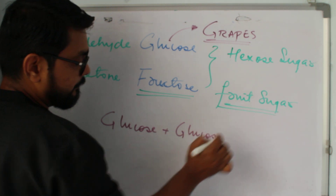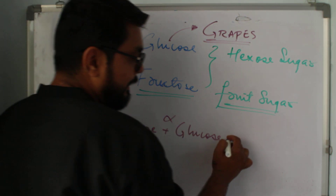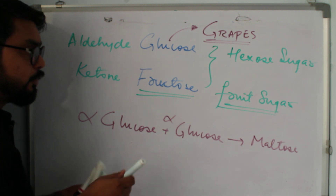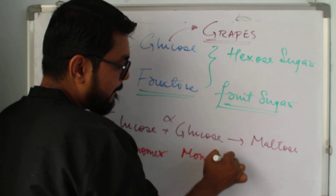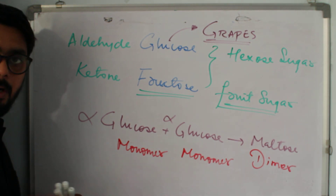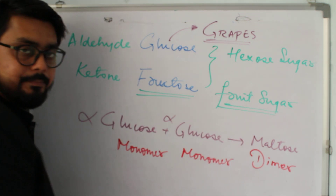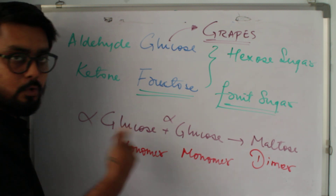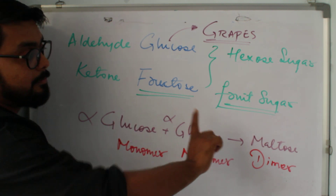Now we'll add glucose plus glucose — specifically alpha glucose plus alpha glucose — to make a structure termed maltose. Maltose is made up of two monomers of alpha glucose, giving us a dimer. So alpha glucose is a monosaccharide, and maltose is a disaccharide. To build it, we need to draw two Haworth projections of glucose.